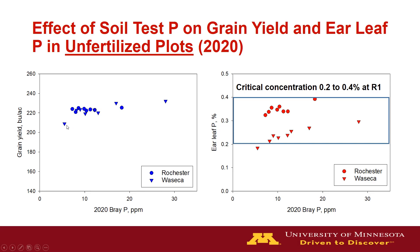At Waseca, one treatment with a soil test of about 6 parts per million saw a pretty decent yield penalty — maybe 10 to 15 bushels compared to other treatments. So with P and K, you can have some low soil test levels and still only have a marginal yield penalty, unlike nitrogen. In these data, once we got around 10 parts per million, there was really no advantage to having a higher soil test level for phosphorus.